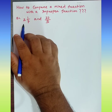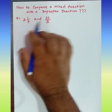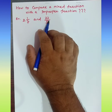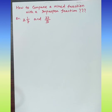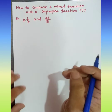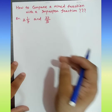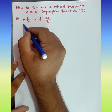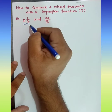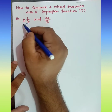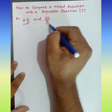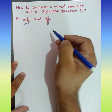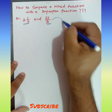We have 2 whole 1/7, which is a mixed fraction, and 22/5, which is an improper fraction. I will show you how to compare a mixed fraction with an improper fraction.